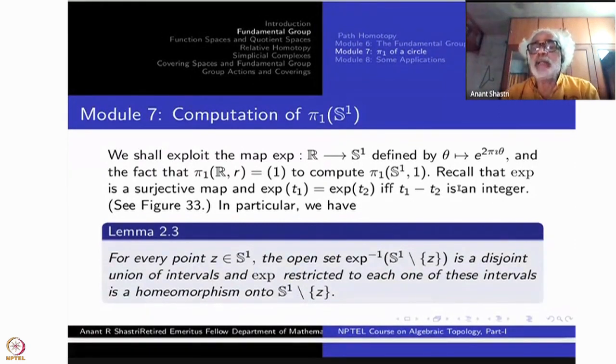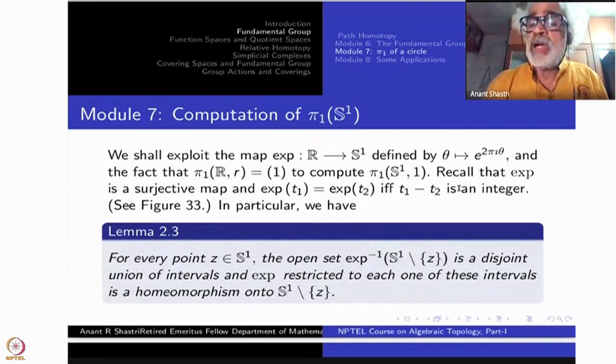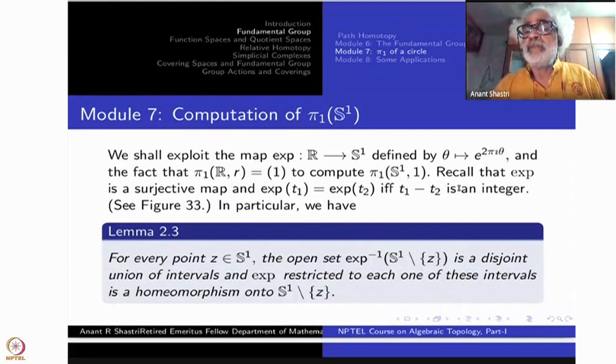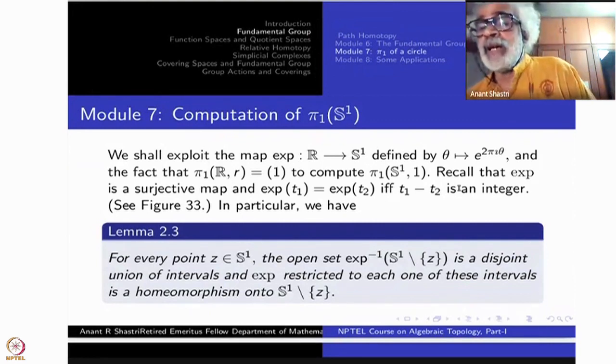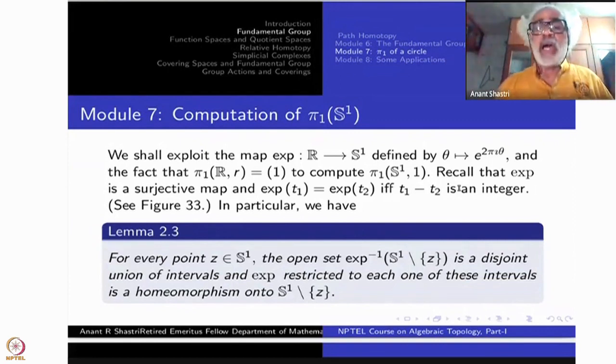The fact that R is contractible, therefore if you take any base point little r, π₁(R,r) is going to be a single point. Any loop based at a single point we have seen is null homotopic inside any interval. So in particular it is true in R also.